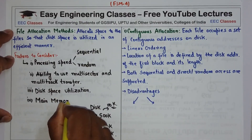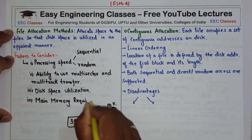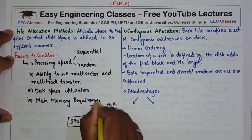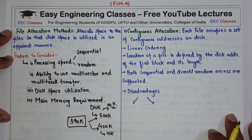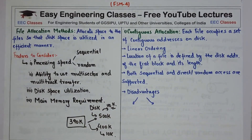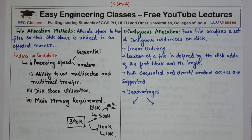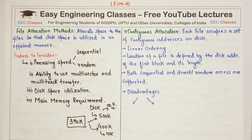Main memory is always a constraint in any operating system — we have limited main memory. So file allocation should be such that main memory requirement is least. These are the factors an operating system should consider before allocating space to a file. Now there are different kinds of allocation methods and we will see each of those methods one by one.